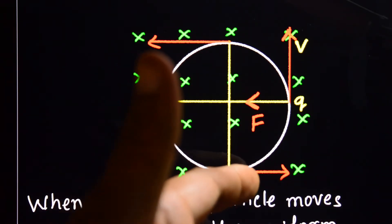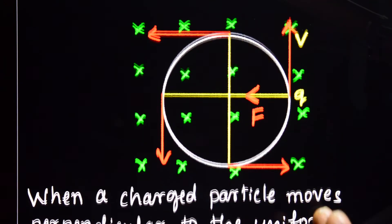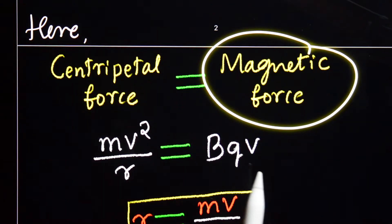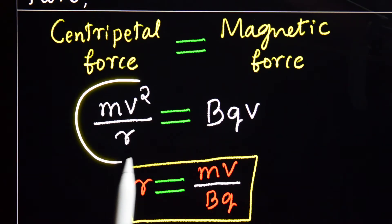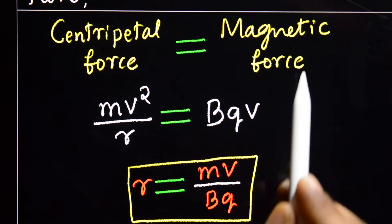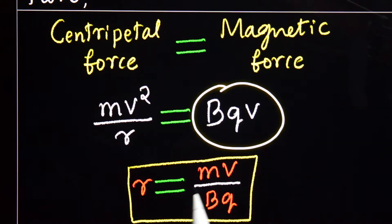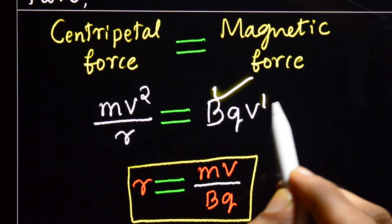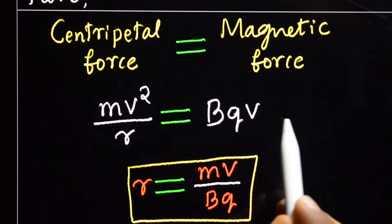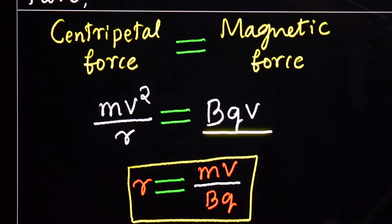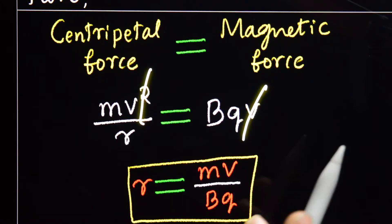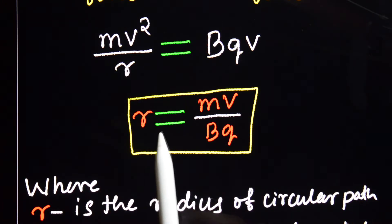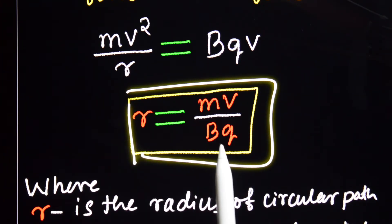The thumb shows the direction of force experienced by the charged particle. Therefore, the magnetic force is providing the centripetal force. Centripetal force formula is M×V²/R. Magnetic force is BQV×sinθ, but here θ = 90°, so sin 90° = 1, giving BQV. The V terms cancel, and we get R = MV / (BQ).